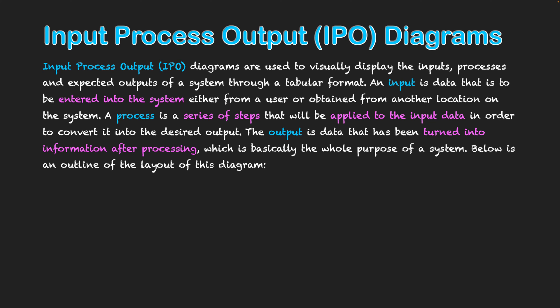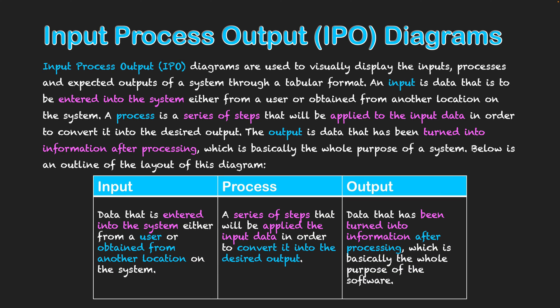Below we're going to summarize that using the diagram. This is what the table looks like — we have a column for input, a column for processing, and a column for output. In the input column is the data we're going to be entering into the system, which might come from a user or another location in the system. The middle column is the processing — the series of steps applied to the input data to turn it into the desired output. In the final column on the right is the output: data that has been turned into information after processing, in line with the purpose of the system.